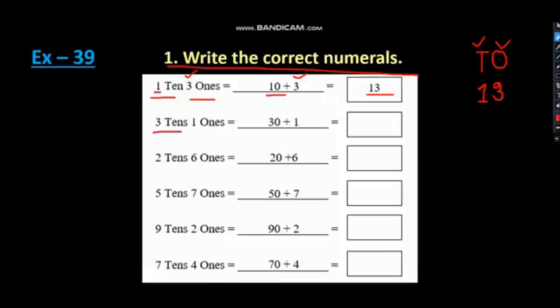Here we have 3 tens and 1 ones. What will we do now? Place them in a place value first. 3 tens and 1 ones. So, 3 tens means 30 and 1 one means 1. So, our answer will be 31. Right?